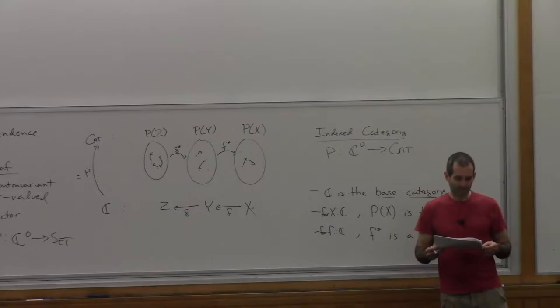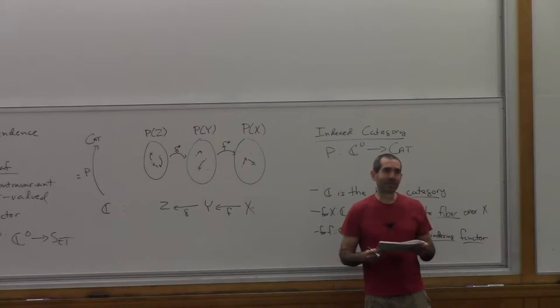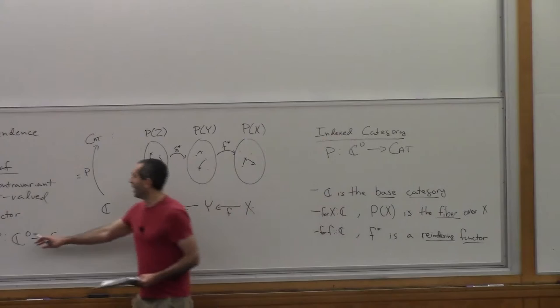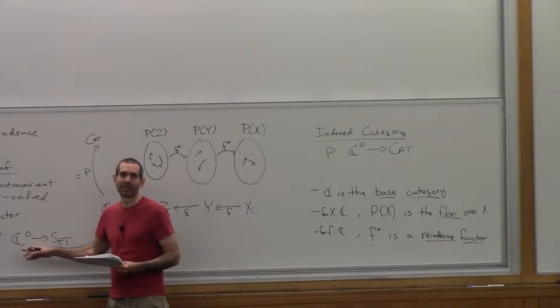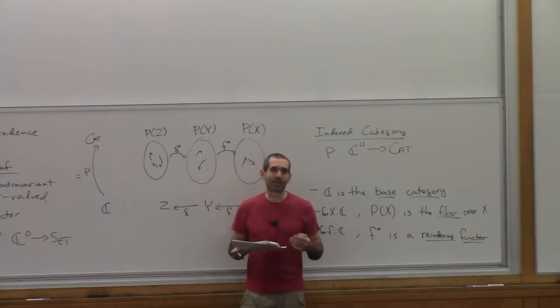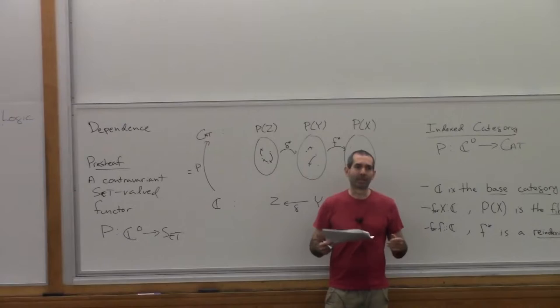Question: why contravariant? The contravariant is totally essential to what's going on, because every category has an opposite category. Instead of writing C-op, I could have just written D, but in my mind, whatever I wanted C to be, I just choose its opposite to be the domain of the functor. We'll see in a moment, when we try to interpret the term language of first-order logic, why it's more natural to have the domain be the opposite of the category we have in mind.